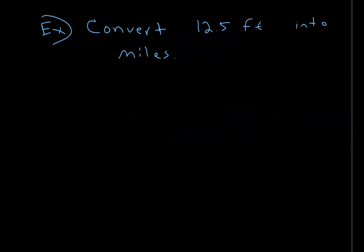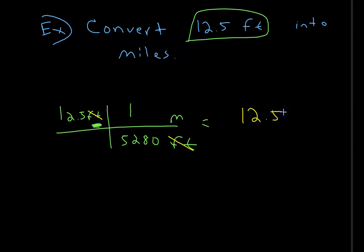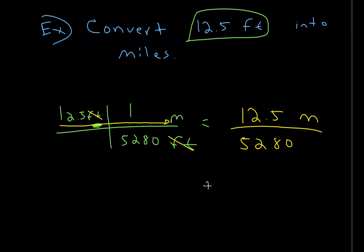Next: convert 12.5 feet into miles. Set up the picket fence with 12.5 feet. I want to change that into miles and get rid of feet, so feet goes on the bottom. In one mile there are 5,280 feet, so I put 1 mile on top and 5,280 feet on the bottom.